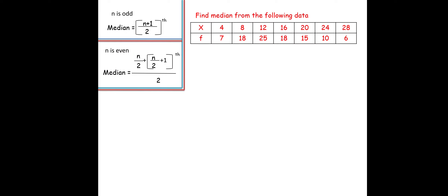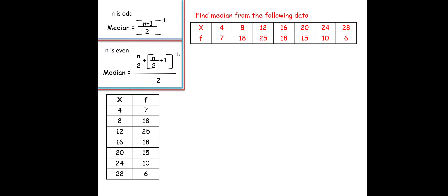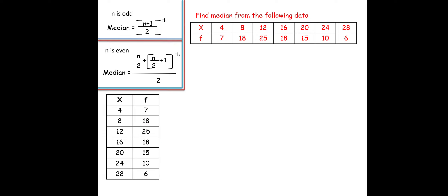We have a problem with an x value and frequency values. We need to know the value of n — whether it is odd or even. To find n, we add up all the frequencies: 7 + 18 + 25 + 18 + 15 + 10 + 16. Adding these gives n = 99, which is odd. So we use the odd formula.